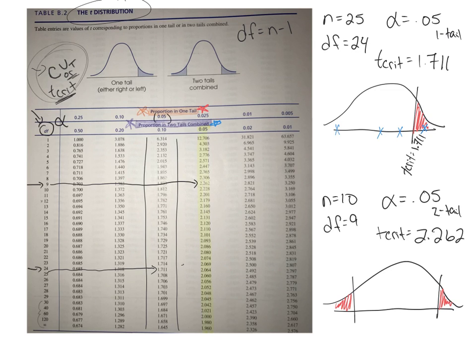So my t crit is actually plus or minus negative 2.262. So I have one t crit over here at negative 2.262, and I have one over here at positive 2.262, all right?